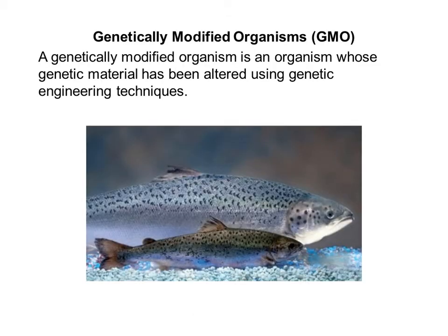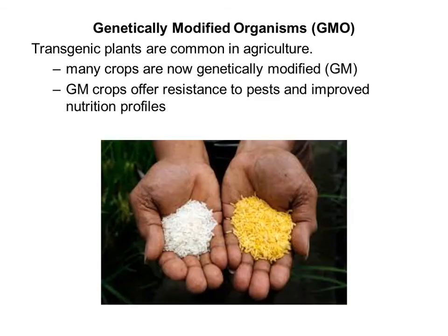GMO stands for genetically modified organisms — it's an organism whose genetic material has been altered using genetic engineering techniques. Genetically modified organisms are pretty common in agriculture. These GM crops have a couple uses: one is they can be resistant to pests, so instead of spraying toxic pesticides on a plant, we can insert a gene that allows the plant to be naturally resistant to bugs. Another way we can genetically modify crops is to improve their nutrition profiles. This picture shows golden rice, which is enhanced with beta-carotene that helps with eye health. In countries that were having some struggles with eye health, they introduced this golden rice and it improved the health of people's eyes.